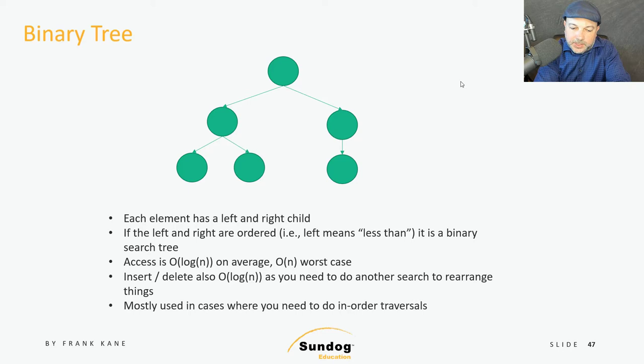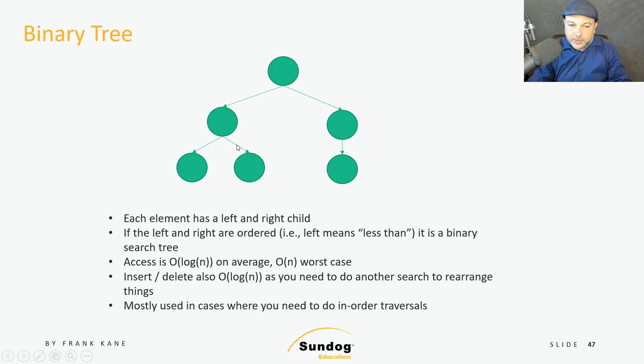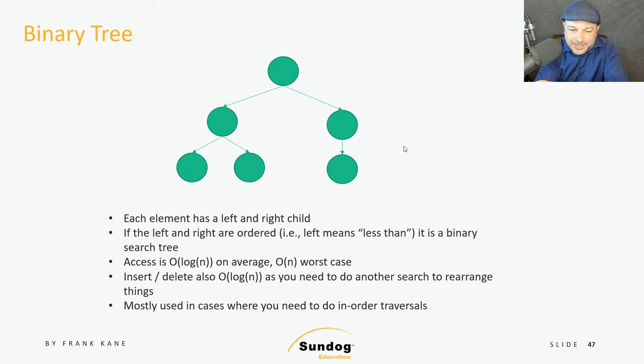Binary search trees are mostly used in cases where you need to do an in-order traversal of your data. It is possible to write a pretty simple recursive algorithm that goes through everything in a binary search tree and prints them out in sorted order — you basically work your way down all the way to the left, go up a step, go to the right, and recursively search through everything in sorted order. A very common coding question is to implement a binary search tree in-order traversal, and that's something easily done using recursion — so if you want a little practice for your coding skills, that's a good one to try.